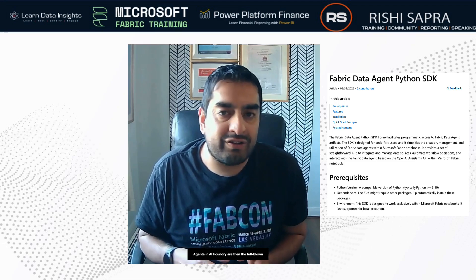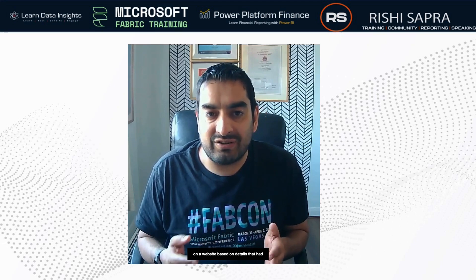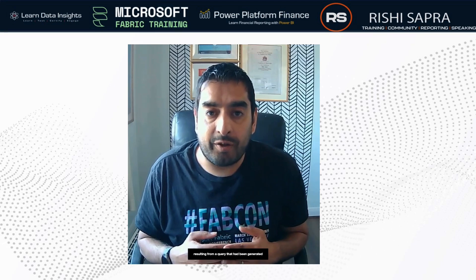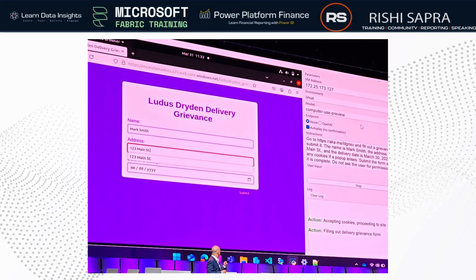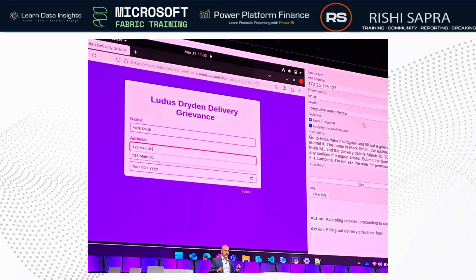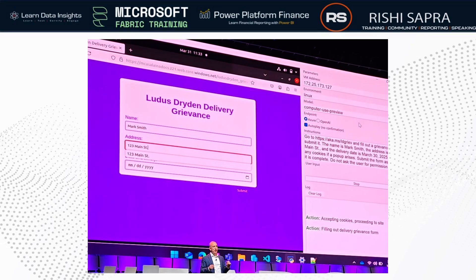Agents in AI Foundry are the full-blown agents that can perform tasks. In the second part of the keynote, Marco Castellania showed an agent slowly filling in a form on a website based on details provided — details perhaps resulting from a query generated by a Fabric data agent, based on structured data in the semantic model, lakehouse, or KQL database.